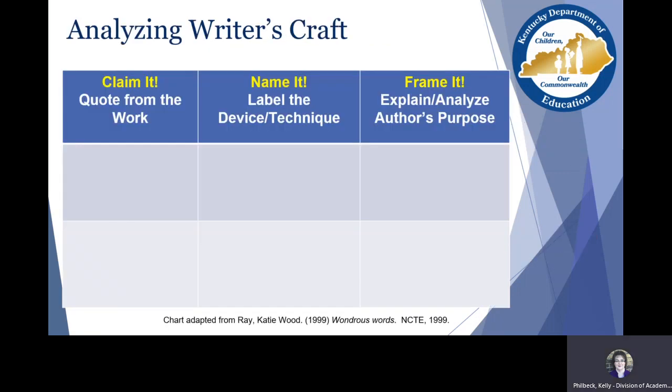Now we want to go to a charting structure. This is a chart adapted from Katie Wood Ray in 'Wondrous Words,' customized a bit with 'claim it, name it, and frame it.' The first column — claiming it — is about our reading standard one, which is all about textual evidence. That first column is just extracting that evidence from the text.